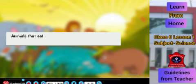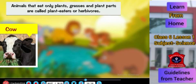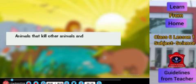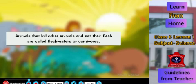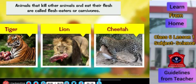Animals that eat only plants, grasses, and plant parts are called plant eaters or herbivores. We have cow, deer, rabbit, and giraffe. Animals that eat flesh of other animals are called flesh eaters or carnivores. They could be a tiger, a lion, or a cheetah.